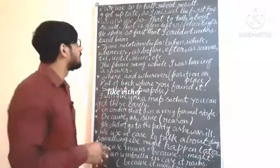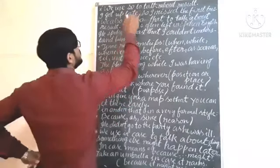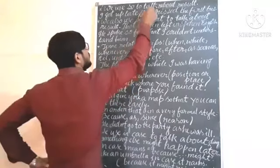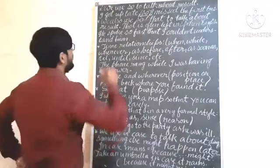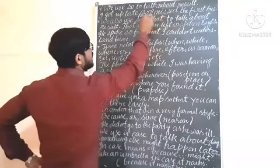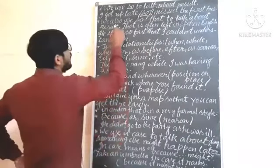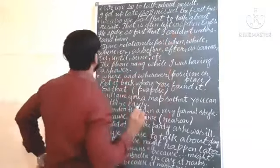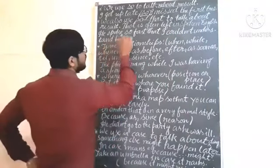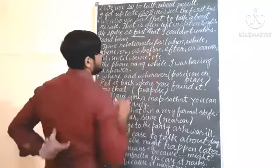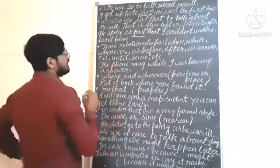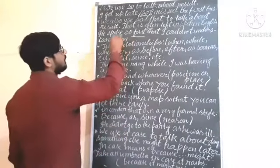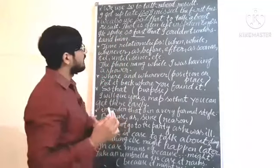Now see the further uses. We use 'so' to talk about result. For example: 'I got up late, so I missed the train.' The reason is I got up late and the result is I missed the train — we use 'so' for result. We also use 'so that' to talk about result; 'that' is often left out in spoken English. Example: 'He spoke so fast that I couldn't understand him.' So 'so that' is used here for result.